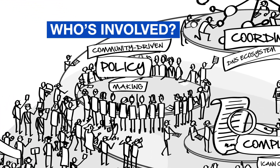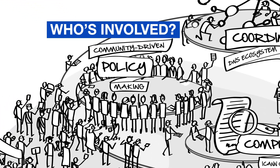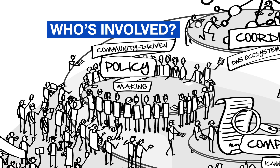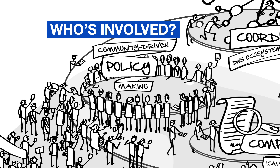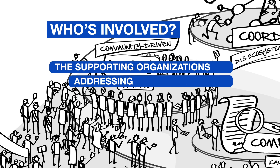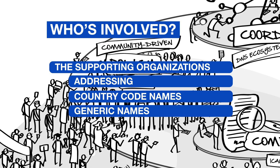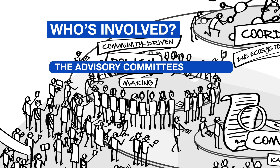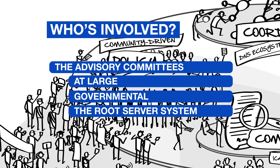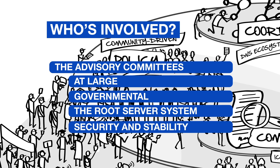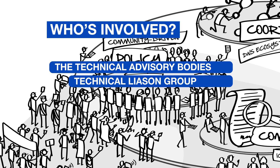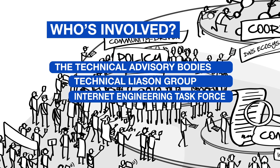Who's involved? A number of groups, each of which represents a different interest on the Internet. All of them come together with the Board of Directors. The supporting organizations cover addressing, country code names, and generic names. The advisory committees include at-large, governmental, the root server system, and security and stability. And the technical advisory bodies include the technical liaison group and the Internet Engineering Task Force.